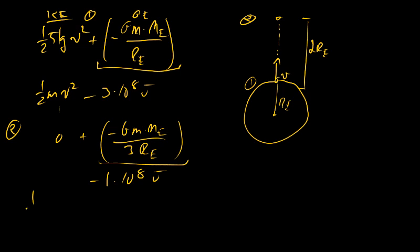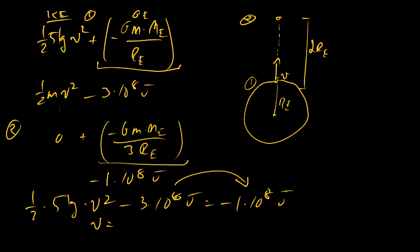So now we have 1 half times 5 kilograms times V squared minus 3 times 10 to the 8 joules equals minus 1 times 10 to the 8 joules. And I can bring the 3 times 10 to the 8 joules over, and then solve for V, and I'm going to get a number around 8,900 meters per second. Notice that when I bring the 3 times 10 to the 8 joules over, this becomes a positive number on the right-hand side, which it has to be because it's equal to a V squared.